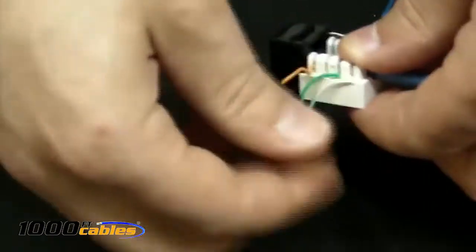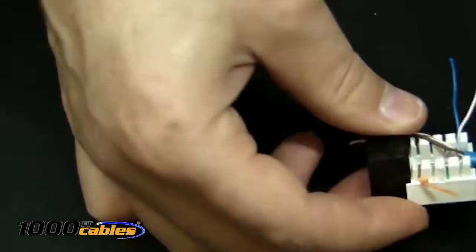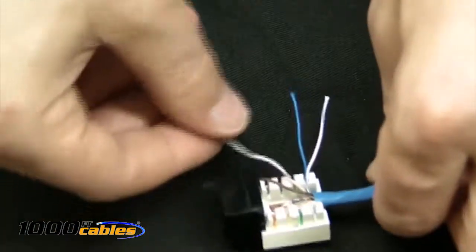If you did it right, you should just be able to twist these wires off, like so. Voila. Now we've got one side done.